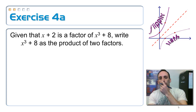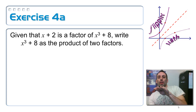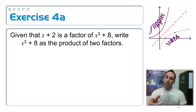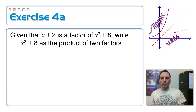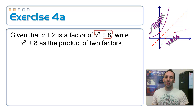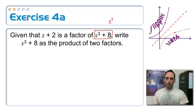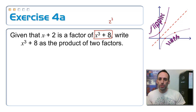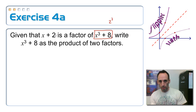On exercise 4 part A, given that x plus 2 is a factor of x cubed plus 8, write x cubed plus 8 as a product of two factors. Now look at this polynomial: x cubed is a perfect cube, and 8 is also a perfect cube because it's 2 to the third power. So what we're looking at is the sum of two cubes. We can take the cube root of x to get x, and the cube root of 8 to get 2.